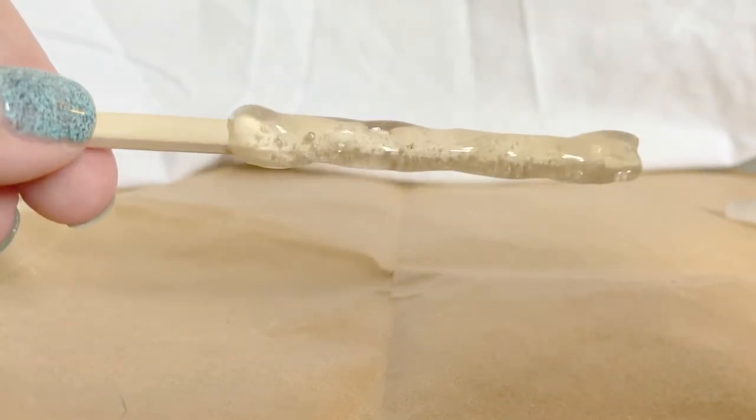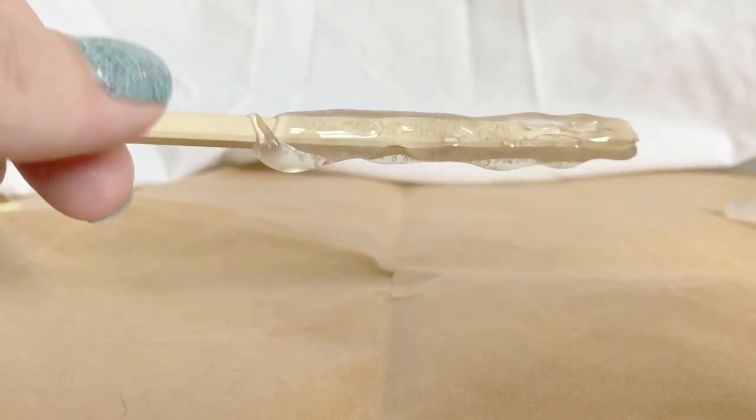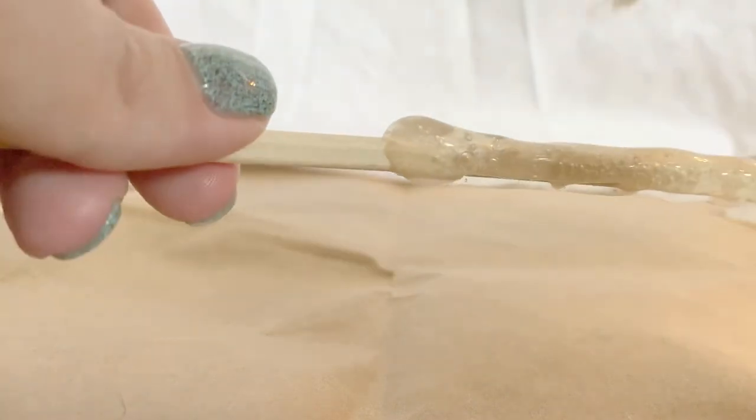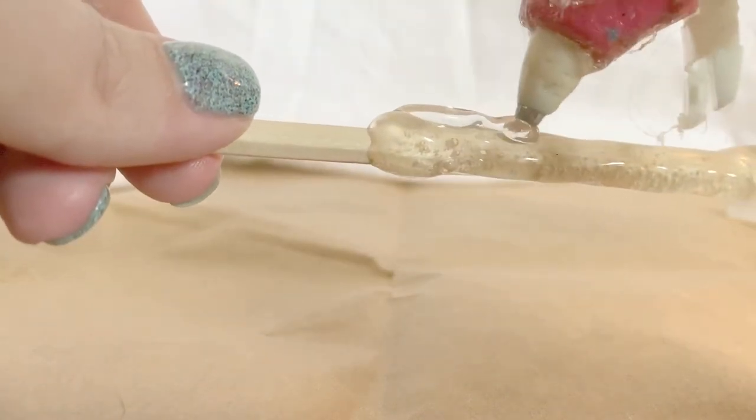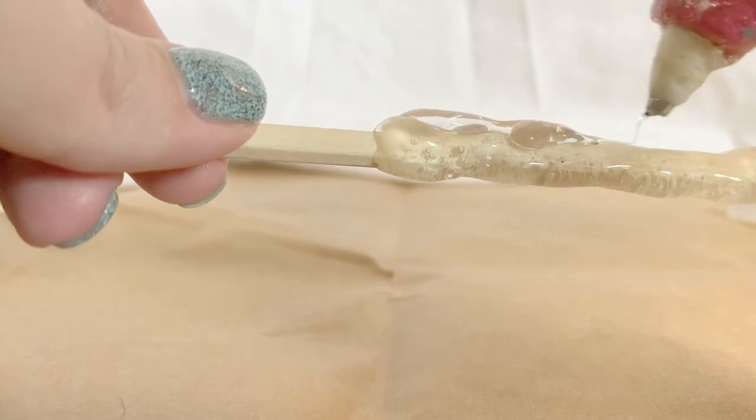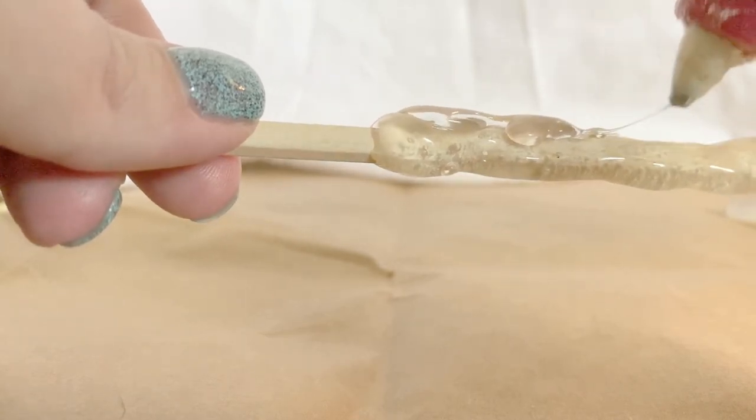My first layer is dry. I'm going to go ahead and add an extra layer so that my grip is good and thick on my wand. And again we're going to go all the way around with this.